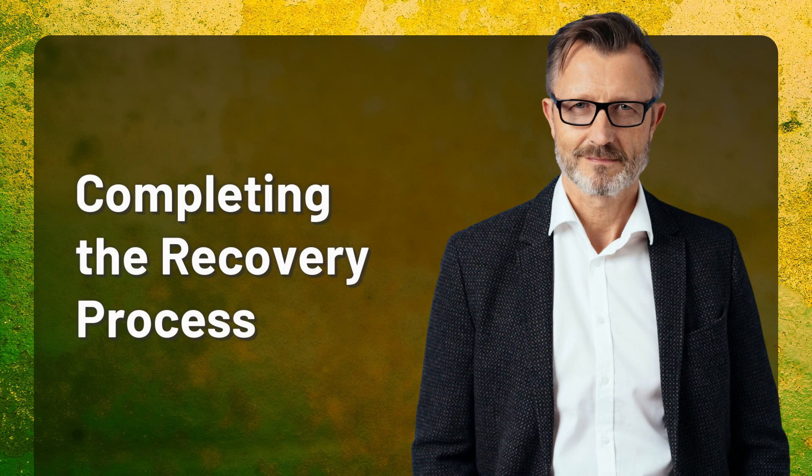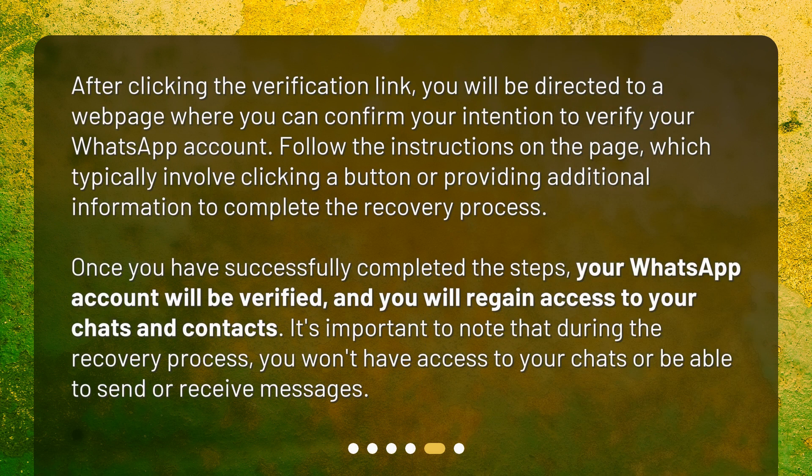Completing the recovery process. After clicking the verification link, you will be directed to a webpage where you can confirm your intention to verify your WhatsApp account. Follow the instructions on the page, which typically involve clicking a button or providing additional information to complete the recovery process. Once you have successfully completed the steps, your WhatsApp account will be verified and you will regain access to your chats and contacts. It's important to note that during the recovery process, you won't have access to your chats or be able to send or receive messages.